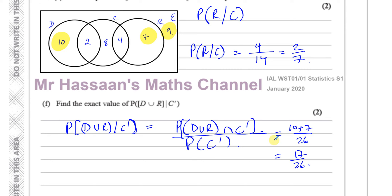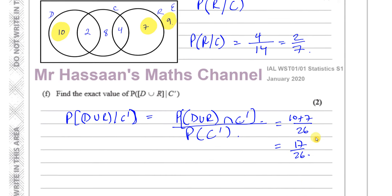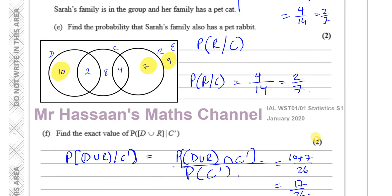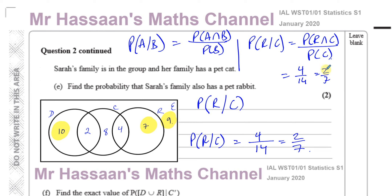So 17 over 26 is the answer to part F — leave it as an exact fraction. And we have now completed question number 2 from January 2020 S1. Other questions from this paper will be found in the playlist. Other questions about probability in S1 should appear in another playlist. You can subscribe to my channel by clicking the link, and at the top of the page there will be a link to other S1 papers I have answered. Thank you for watching and see you soon.